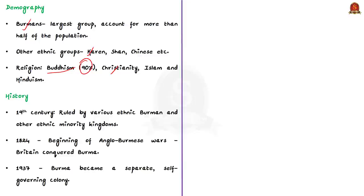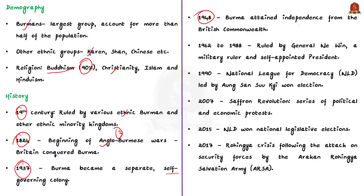Various ethnic Burman and other ethnic minority kingdoms occupied the present borders of Burma through the 19th century. Even today, several minority groups with independent armies control territory within Myanmar. Britain conquered Burma through the three Anglo-Burmese wars, which began in 1824. Burma was administered as a province of India until 1937, when it became a separate self-governing colony. After World War II, in 1948, Burma attained independence from the British Commonwealth. Burma was then under military rule for decades. General Ne Win dominated the government from 1962 to 1988, first as military ruler, then as self-appointed president. In 1989, the name was changed to Myanmar.